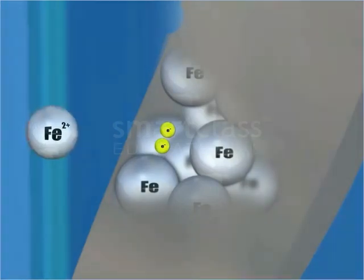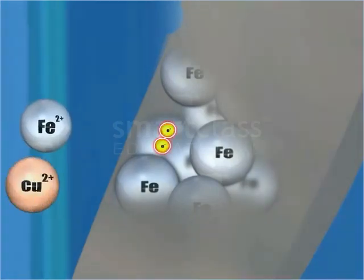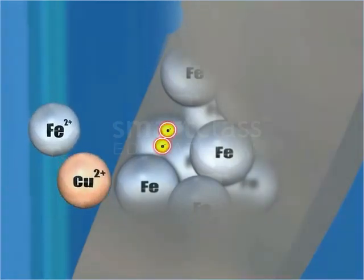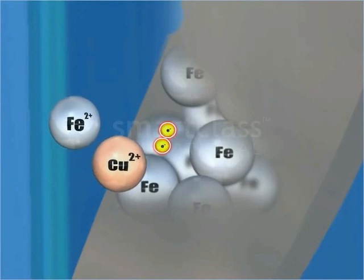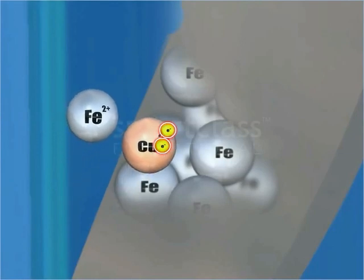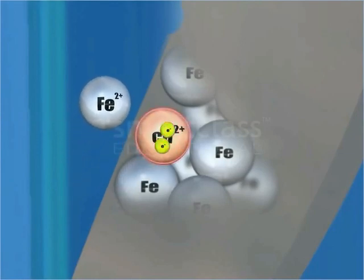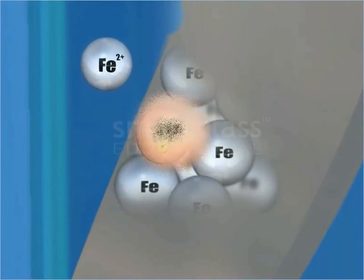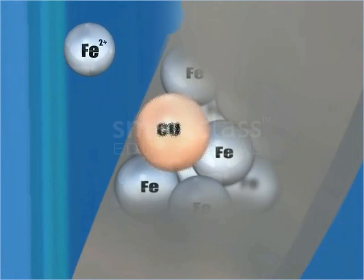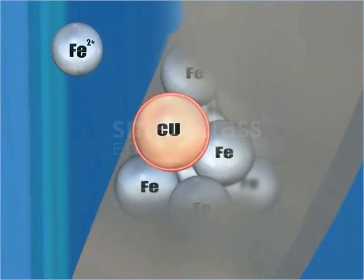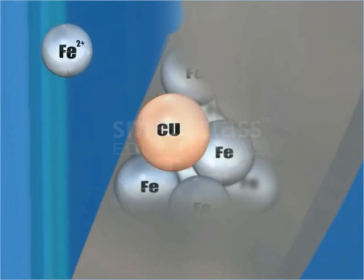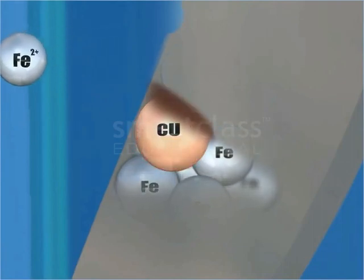The electrons lost by the iron atoms are gained by the copper ions present in the solution. This changes the copper ions to copper atoms, which deposit on the knife.